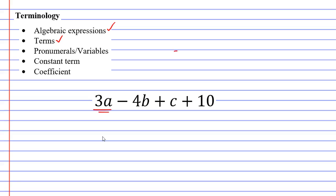3a is the first term. Then we have 4b. Now to be more specific, it's actually negative 4b because it's got a minus symbol in front of it. The third term is just the pronumeral c. And then the fourth term is the number 10. You will notice that each term is separated by a minus or a plus symbol.